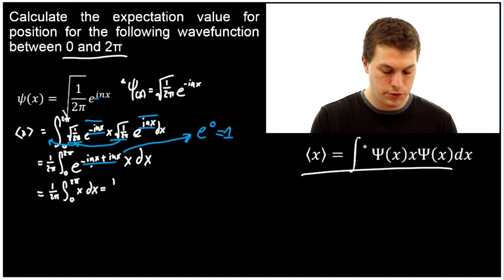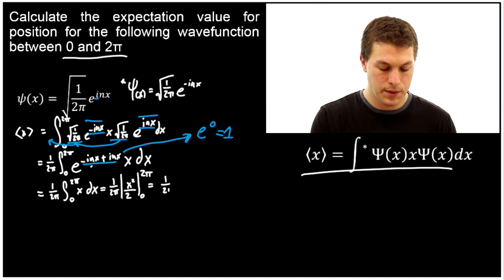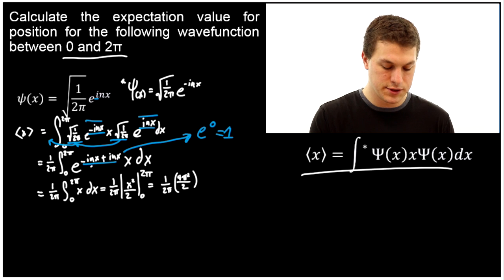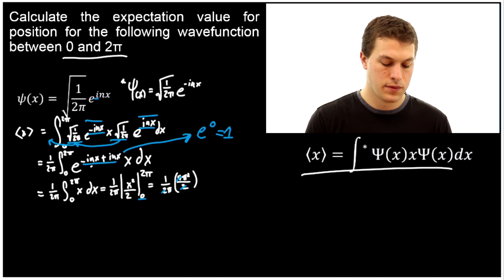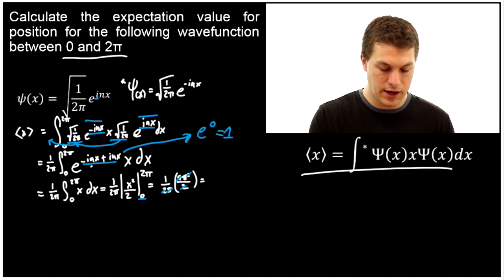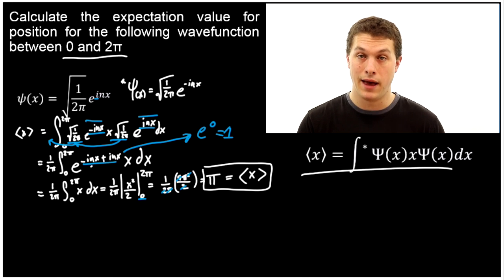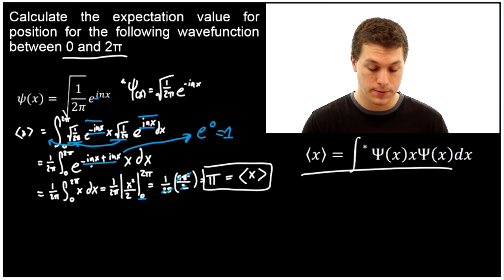Now we evaluate the integral. We still have 1 over 2π, and the integral of x is x squared over 2, evaluated from 0 to 2π. Plugging in 2π gives (2π)² over 2, which is 4π² over 2. Plugging in 0 gives 0. Simplifying: the 2's multiply to give 4, which cancels with the 4 on top, and π² over π leaves one π. So the expectation value for position is π — the average position where that particle will be found if you repeatedly measure an identically prepared quantum state.